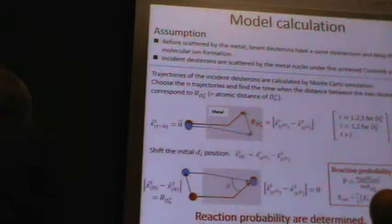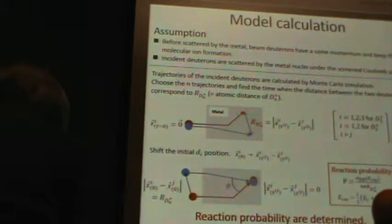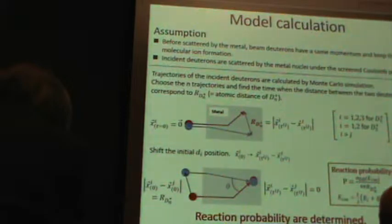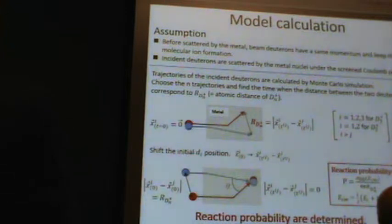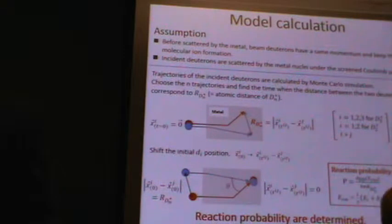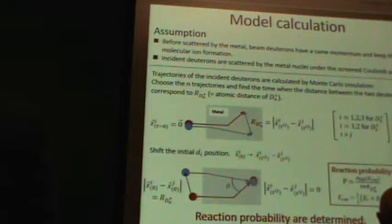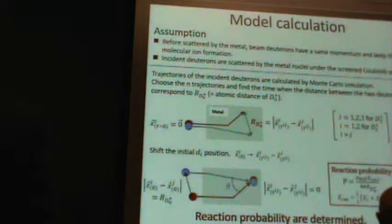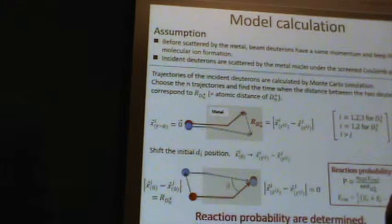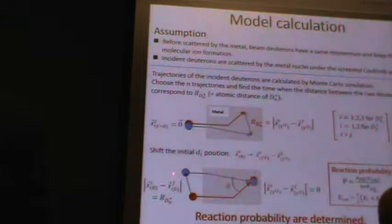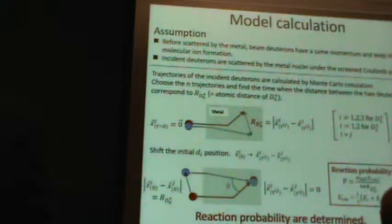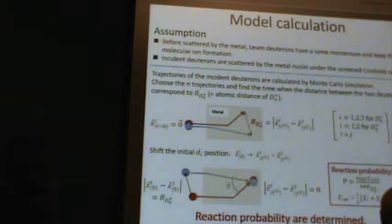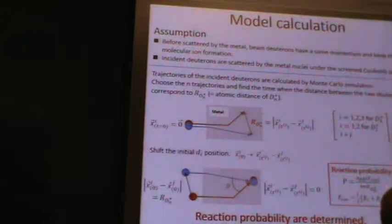Calculation proceeds as follows. First, trajectories of the incident deuterons are calculated by equations of motion. In this calculation, all incident deuterons start from the same position. Second, for the D3+ beam, we choose three trajectories and find the time when the distance between two deuterons corresponds to the distance in D3+. Finally, we shift the initial position of one of the deuterons. The probability of this reaction is obtained by this equation.